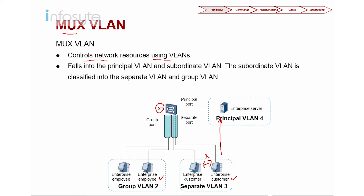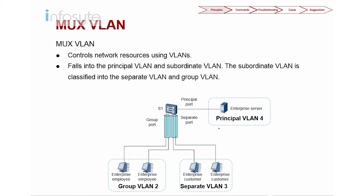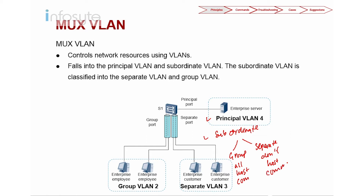For another group on another VLAN, I do allow them to communicate among themselves and connect to the principal. But they are not allowed to communicate with VLAN 4, which connects to the switch — those two groups are not allowed to communicate among themselves. Under such circumstances, you would use Max VLAN, which requires a principal VLAN and a subordinate VLAN. Subordinate VLAN has two types: group VLAN, which allows hosts to communicate, and separate VLAN, which does not. That's the basic concept of Max VLAN.